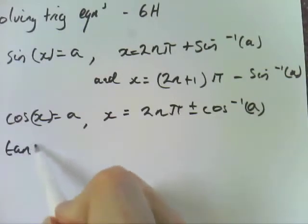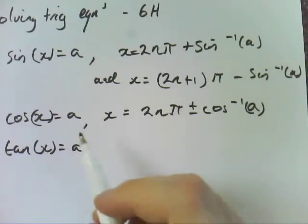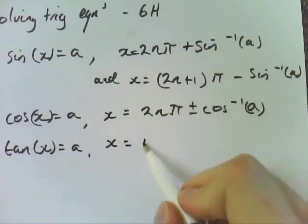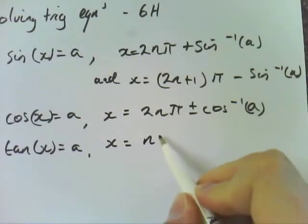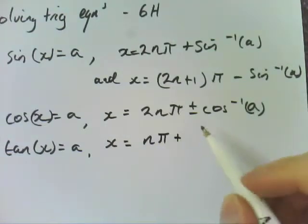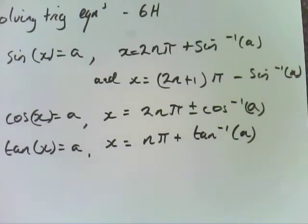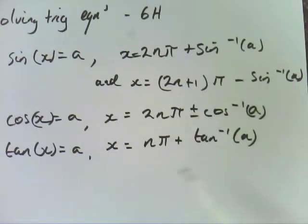And for tan x equals a, the general solution, x equals n pi plus tan to the minus 1 of a. So these are the formulas you need for working out the general solution.